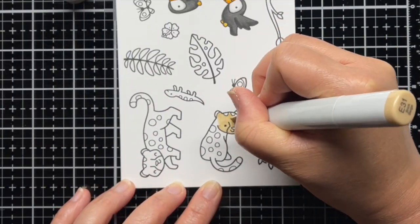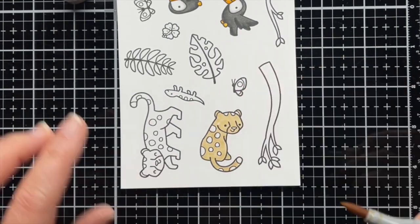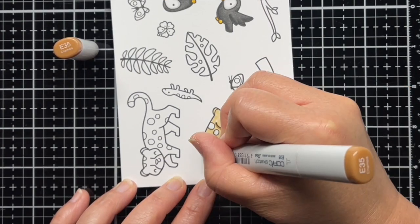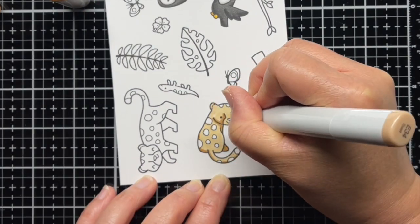For the leopards, I use E30s and a dark gray marker with E27 and E29 for their spots. Off camera, I color the lizard, monstera leaf, and hibiscus flowers and then die cut all the images with the coordinating dies.